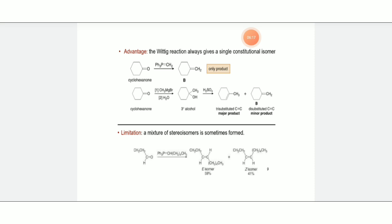Advantages: The Wittig reaction always gives a single constitutional isomer. Cyclohexanone treated with triphenylphosphine ylide forms cyclohexene.